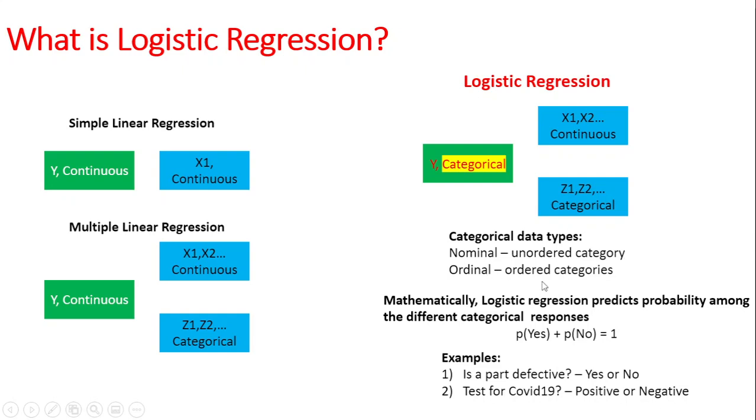Mathematically, when we are doing logistic regression, we try to predict the probability among the different categories of these variables. For example, if you have a response category which has yes and no, then using logistic regression you try to determine the probability of yes, probability of no, and depending on which has the highest value, you assign the category to that particular response.